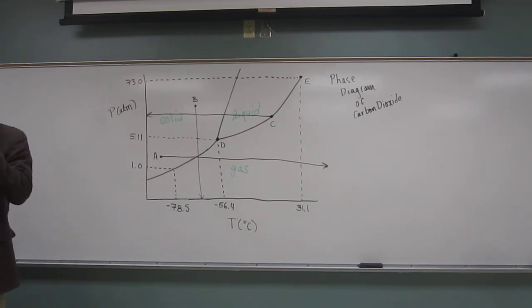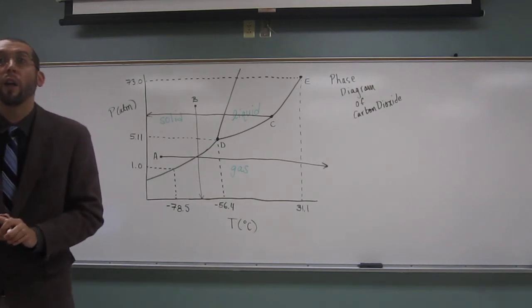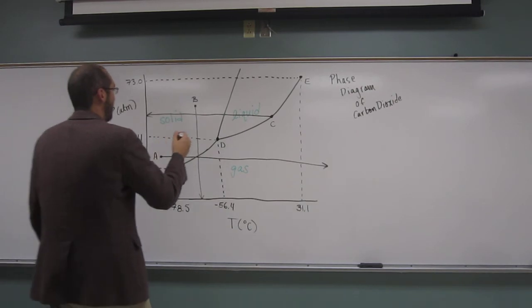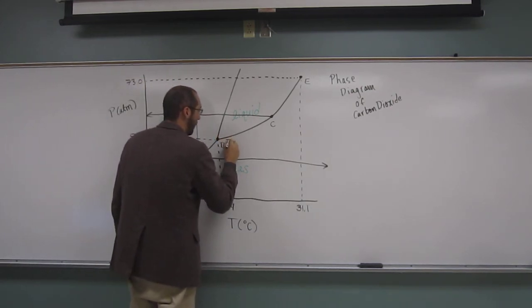So now it asks us, what is the name of point D there? So point D, all phases are present at point D, so that kind of gives you a clue as to the name. So what is the name of that? It's a triple point, very good. So let's write that down so we don't forget it.